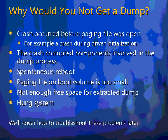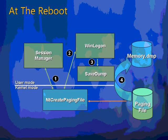At the time of reboot, the session manager process — one of the first user mode processes on the system — initializes paging, determines there's a crash dump in the paging file, and marks that area as off-limits for use. A little later, when Winlogon — the Windows interactive logon manager — starts up, it looks to see if there's a crash in the paging file and if so, spins off a process called savedump, whose sole job is to read that crash data from the paging file and write it out to the target location you specified.